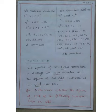The numbers between 11² and 12². 11² is 121, 12² is 144. So there should be 22 numbers.